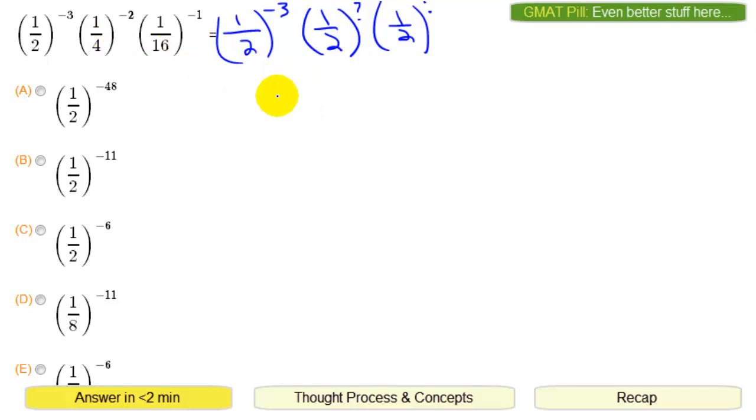So this one-fourth is basically one-half squared, and then of course you have the minus two there.